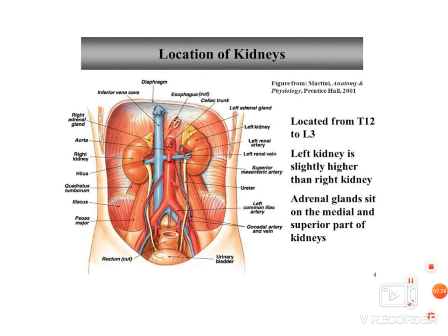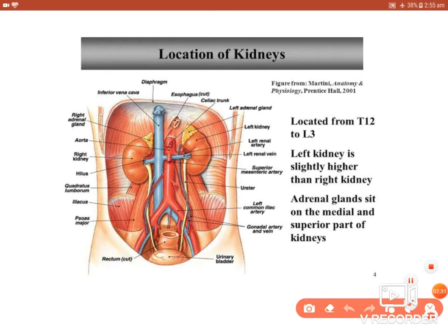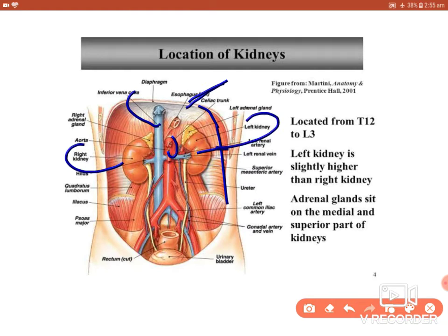On the posterior abdominal wall, we can see the diaphragm, inferior vena cava, and abdominal aorta medially in front of the vertebra. The right kidney and left kidney are visible. Posteriorly, the muscles present are the psoas major medially, quadratus lumborum lateral to that, and transversus abdominis. The kidney lies over the fascia of these muscles. Notably, the right kidney is slightly lower than the left due to the liver on the right side.